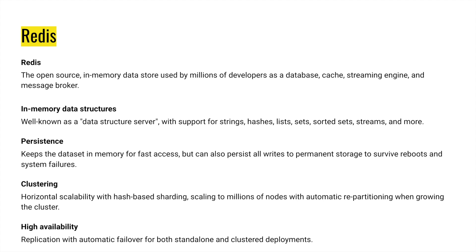The third point is persistence, which is very important. When saving data into the cache, the question is whether that data will be persistent or not. Persistence means data should be stored somewhere as permanent storage. You keep the data in memory for fast access, but you can also persist or save all writes to permanent storage to survive reboots and system failures.